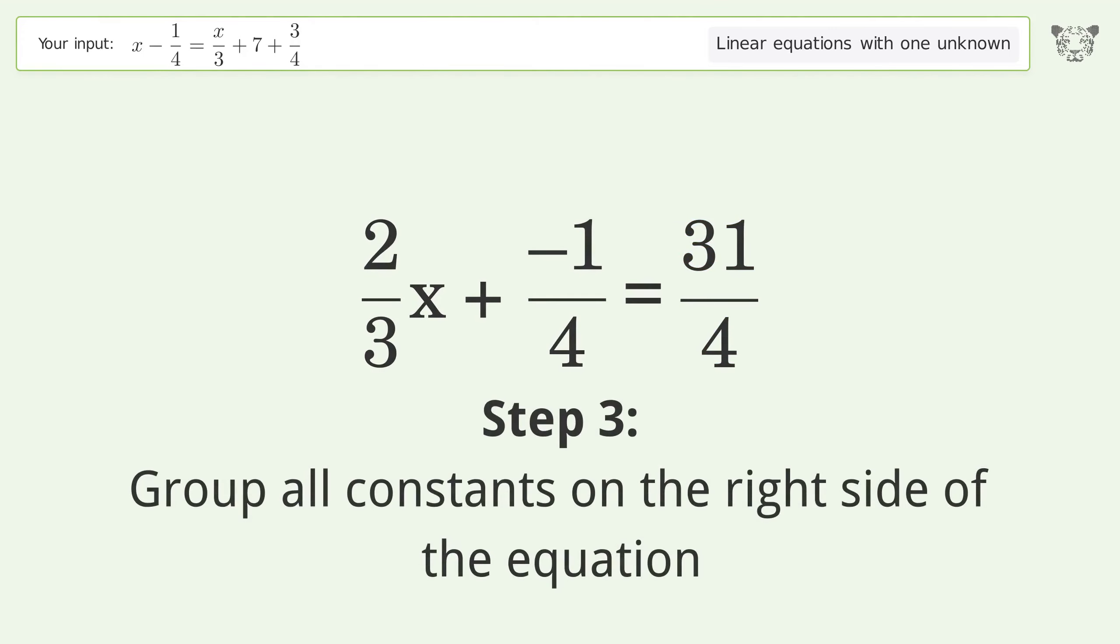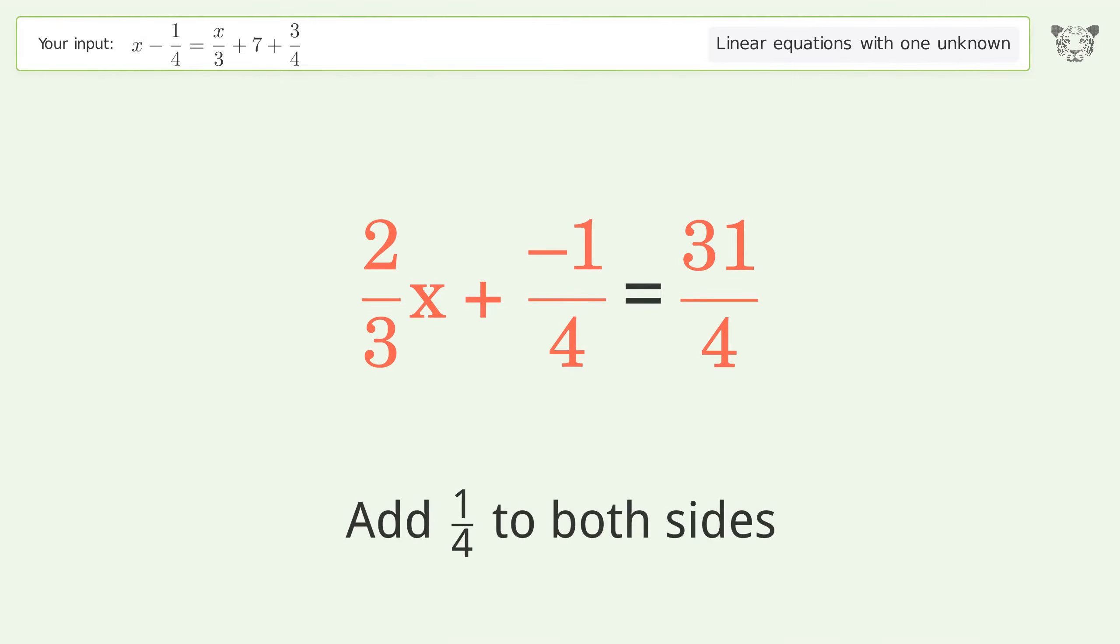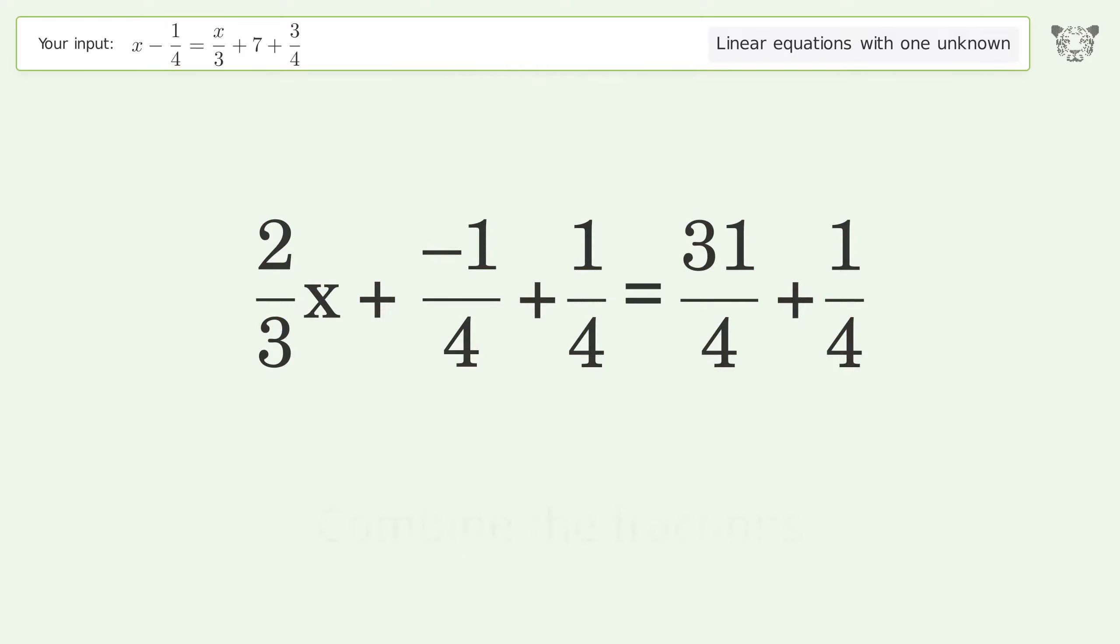Group all constants on the right side of the equation. Add 1 over 4 to both sides. Combine the fractions.